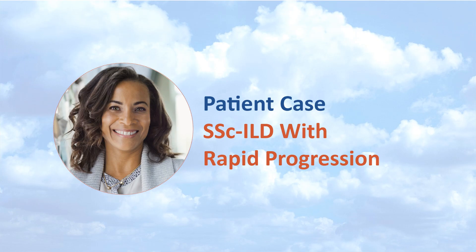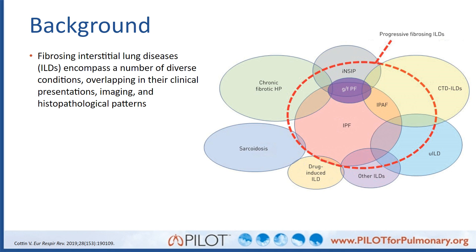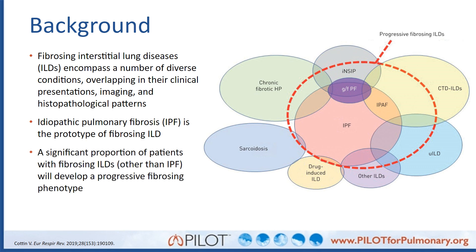Let's talk about a case. But before we do, I want to give some background on fibrosing interstitial lung diseases. These encompass a number of diverse conditions overlapping in their clinical presentations, imaging, and histopathological patterns. Idiopathic pulmonary fibrosis, or IPF, is the prototype of the fibrosing ILD, meaning it generally progresses or gets worse over time. A significant proportion of patients with other ILDs will develop a progressive fibrosing phenotype, including chronic fibrotic HP, sarcoidosis, and connective tissue disease-related ILD.